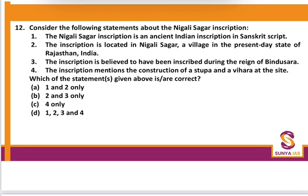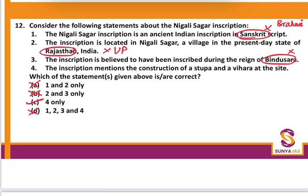Question 12: Statements about the Nigli Sagar Inscription. Statement 1 — it is written in Sanskrit script: incorrect because Sanskrit is a language, not a script; it is written in Brahmi script. Eliminate statement 1. Statement 2 — the inscription is located in Nigli Sagar, a village in Rajasthan: incorrect, it is in Uttar Pradesh. Both 1 and 2 are wrong, so C is the correct option. Statement 3 — it was inscribed during the reign of Bindusara: incorrect, it was during the reign of Ashoka. Statement 4 — it mentions construction of a stupa and vihara: correct.